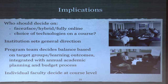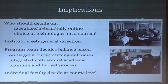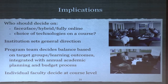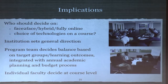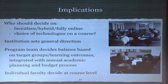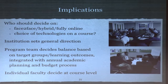Who should decide on face-to-face, hybrid, fully online, and the choice of technologies on a course? I think institutions should set the general direction. University of Ottawa has said they want 20% of all undergraduate teaching hybrid within five years — that's the general direction. But it's the program team that should really decide the balance based on target groups, learning outcomes, and the nature of the subject matter, integrated with the annual academic planning and budget process. Then individual faculty within that program plan decide exactly how they're going to use technology at the course level.